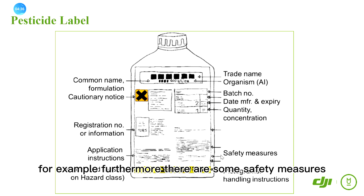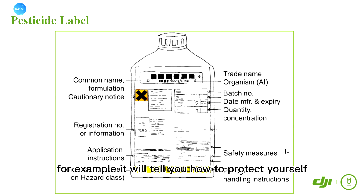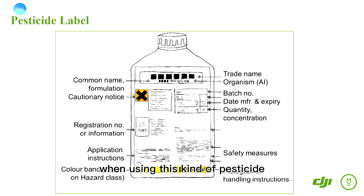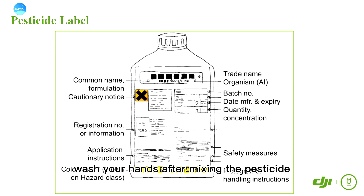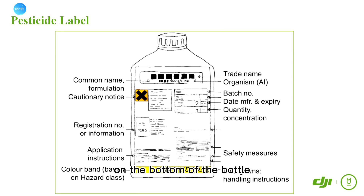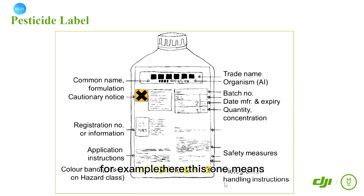Furthermore, there are some safety measures. The label will tell you how to protect yourself when using this kind of pesticide — for example, you should wear a mask and gloves, and wash your hands after mixing the pesticide. On the bottom of the bottle, you can also find pictograms. For example, this one here means handling instructions.